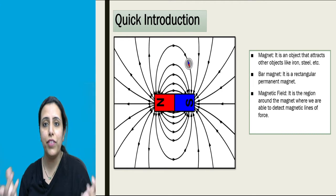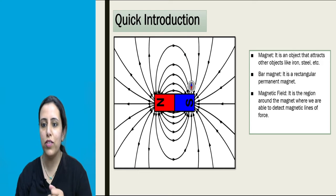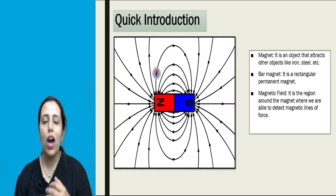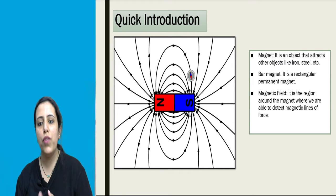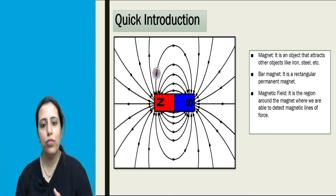Then, magnetic field. Obviously, if there is a magnet, then there will be magnetic field produced. How do we define it? Magnetic field is nothing but the region around the magnet where we are able to detect magnetic lines of force.